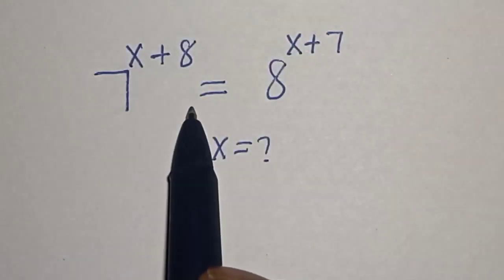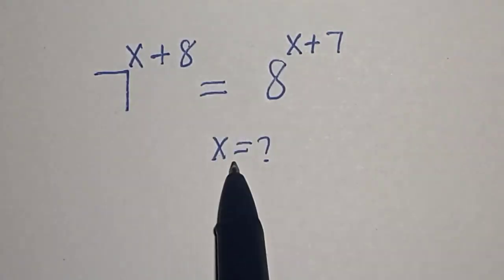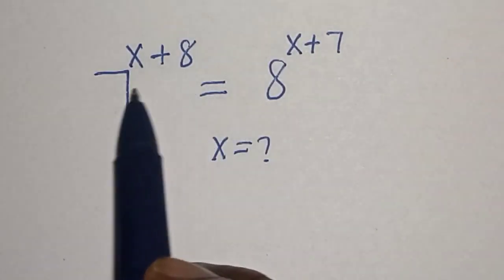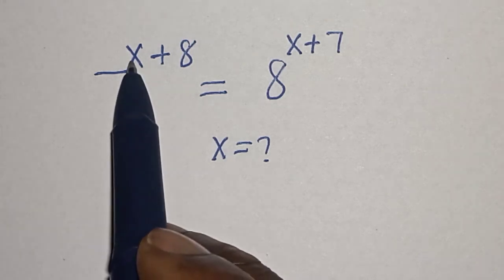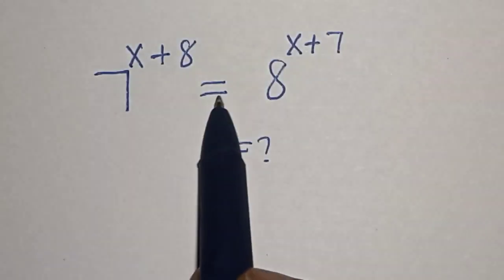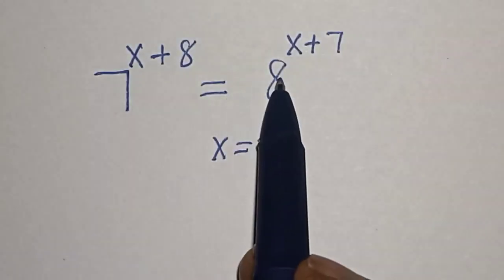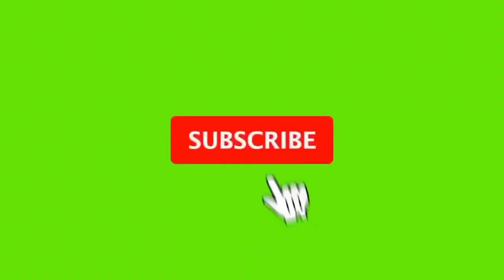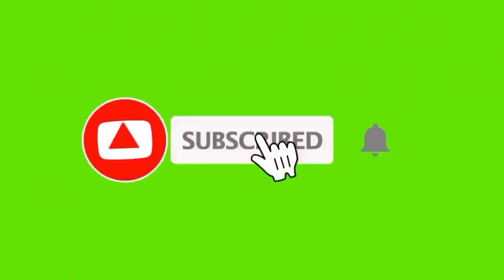Hello, welcome to Magis. In this class we want to find the value of x from this equation: 7 to the power of x plus 8 is equal to 8 to the power of x plus 7. Like, share, comment and subscribe.